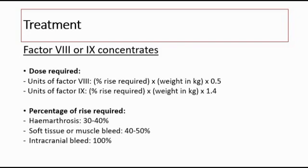The percentage of rise required depends on the clinical presentation and how severe the bleeding is. If the patient presents with haemarthrosis, the % of rise required is normally 30–40%. If there is soft tissue or muscle bleeding, it is 40–50%. If it is a life-threatening hemorrhage, like intracranial bleeding, the % of rise required is 100%.